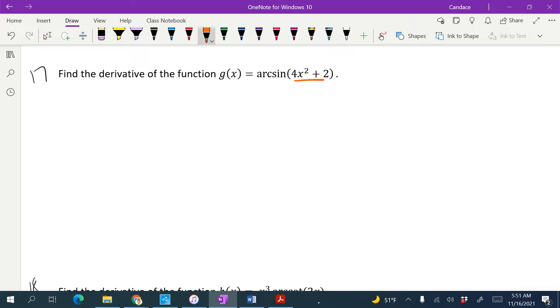It looks like we do have a chain rule because we've got an inside function. So my u is going to be 4x squared plus 2, meaning that u prime is 8x.